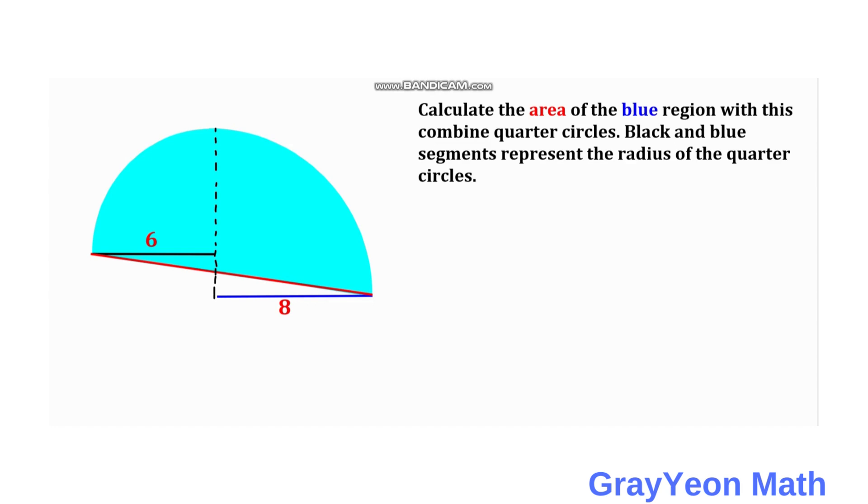So we see that this radius is 6 since this is a quarter circle, and this radius is 8 already, and this distance is actually 2 units because 8 minus 6 is equal to 2.